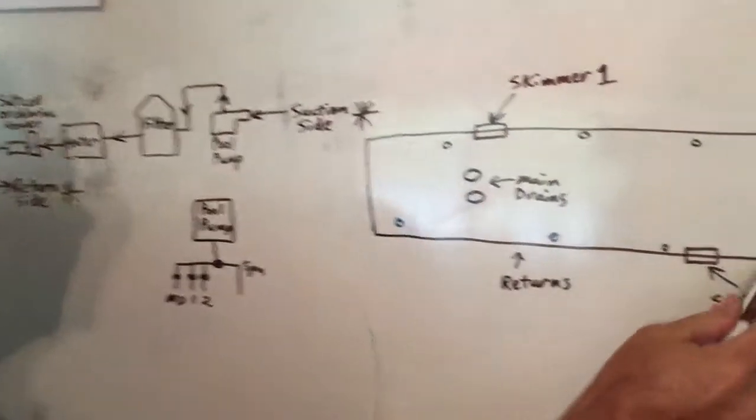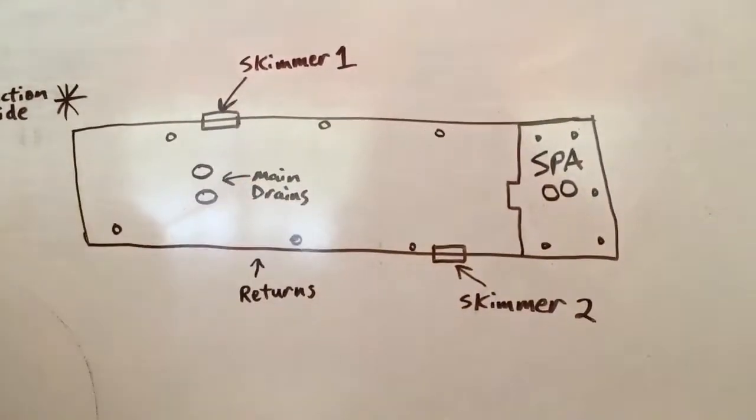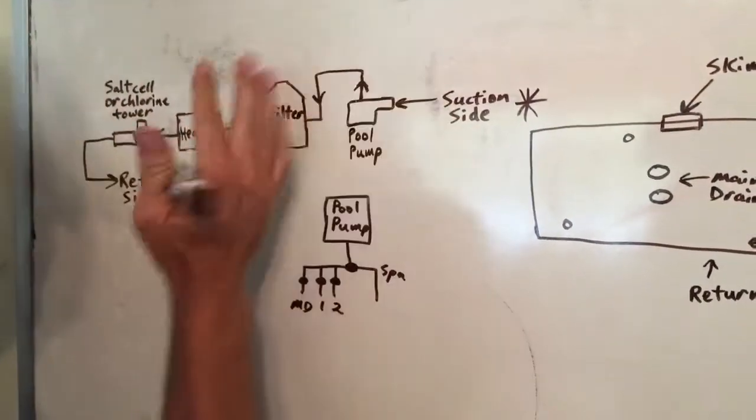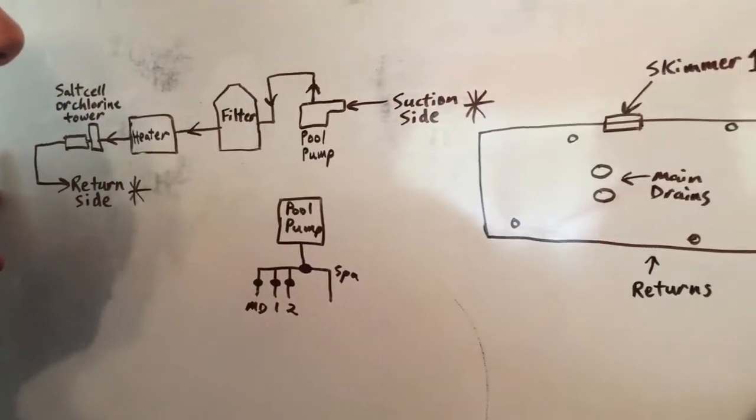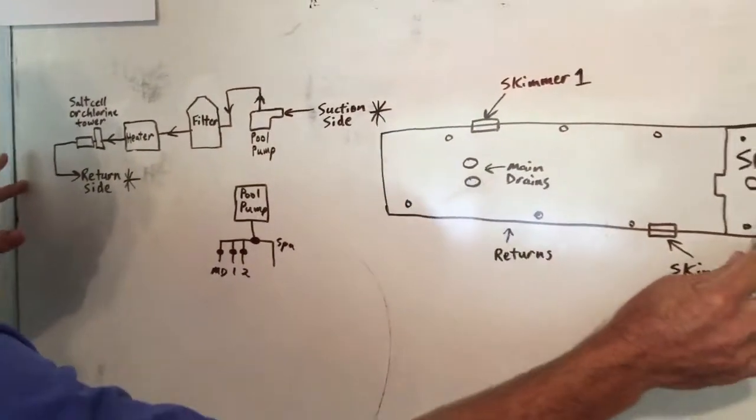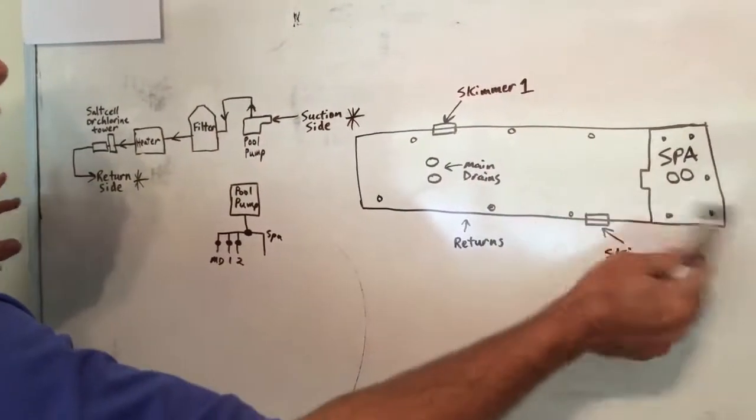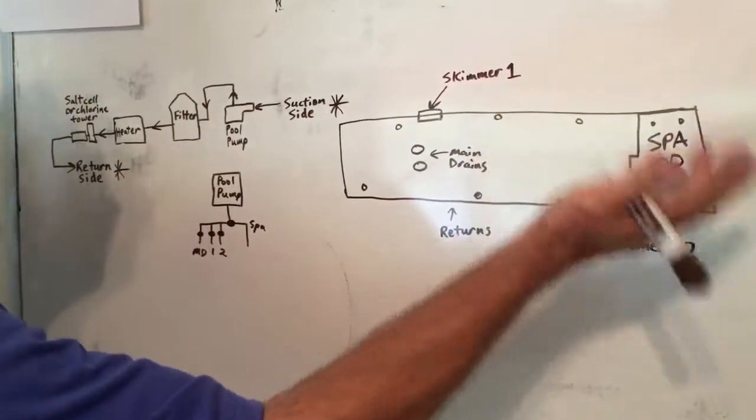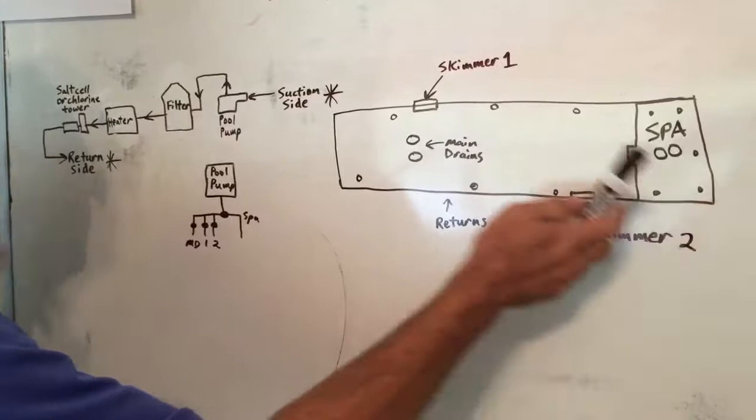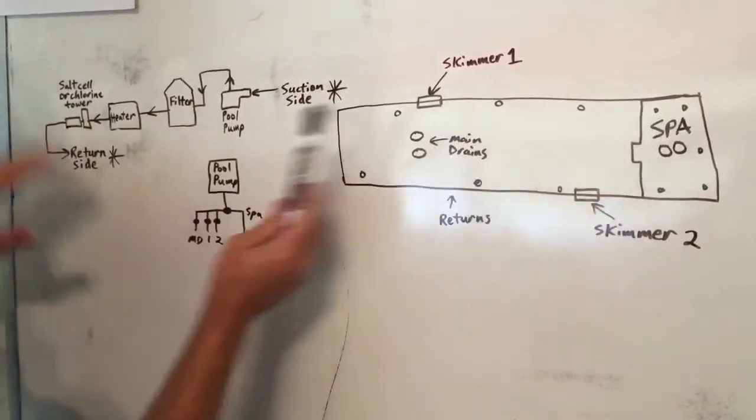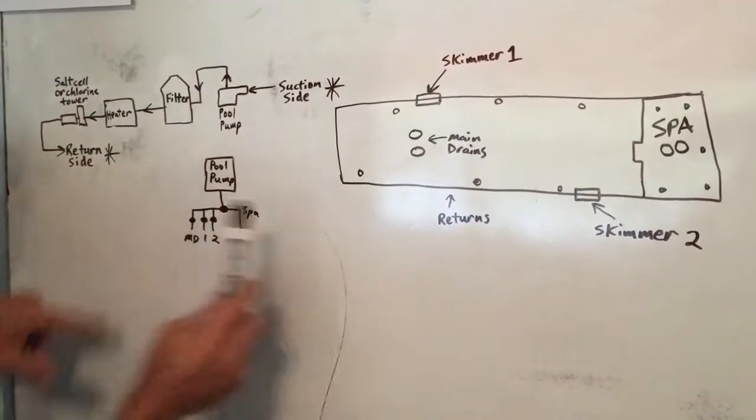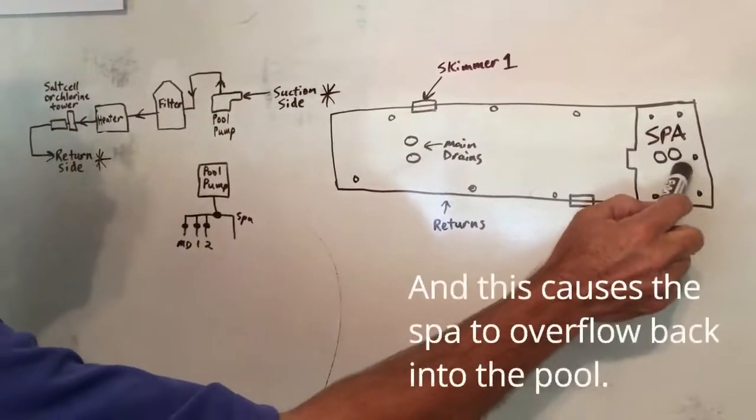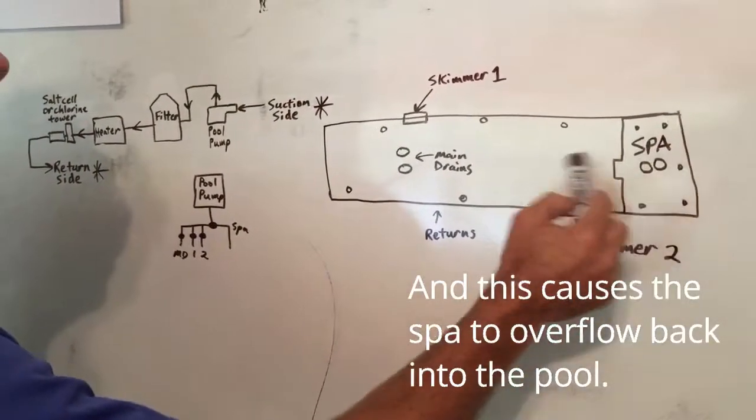One more thing to explain is sometimes there's a dedicated line on the pool side that is going to send water continually to the spa. Because we want the water to be fresh in the spa, if we never sent any water there, it would stagnate and not be good. And so when it comes back, it's going to mostly go through the pool returns. There might be one dedicated line that goes to the spa to give it fresh water.